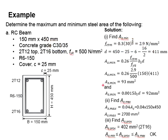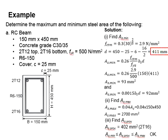Next, you need to calculate d, the effective depth. D is calculated by taking 450 minus the cover, minus the shear link diameter, minus half of the reinforcement bar diameter, giving a total of 411 mm. Substituting the values into the first equation, you get AS minimum equals 93 mm².